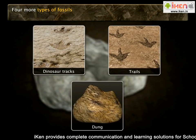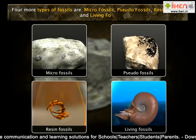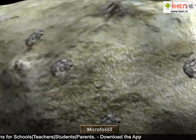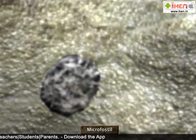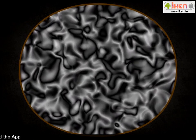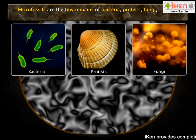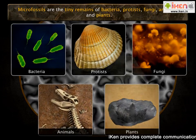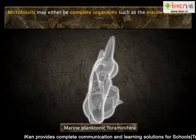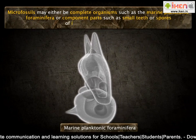There are four other types of fossils apart from the two major ones: micro fossils, pseudo fossils, resin fossils, and living fossils. A micro fossil is a descriptive term applied to fossilized plants and animals whose size is at or below the level at which the fossil can be analyzed by the naked eye. Micro fossils are the tiny remains of bacteria, protists, fungi, animals, and plants, and may be complete organisms such as marine planktonic foraminifera, or component parts such as small teeth or spores.